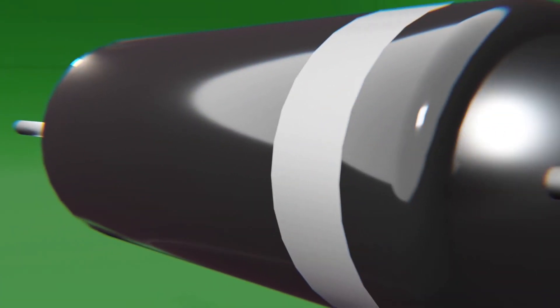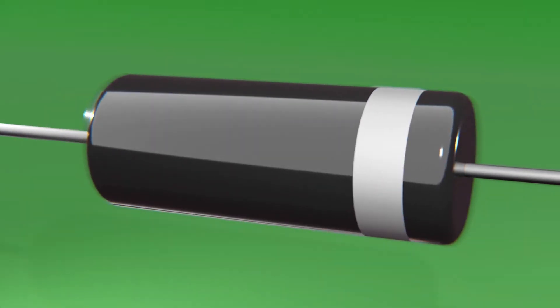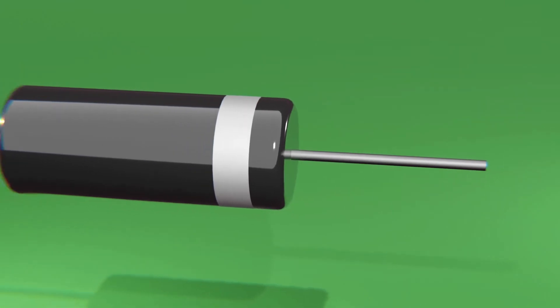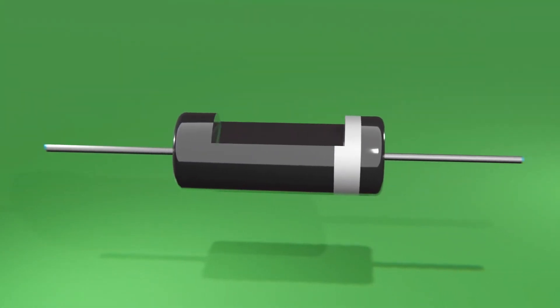The diode is an essential component of modern electronics and its main characteristic is that it only allows the passage of electricity in a single direction. And maybe you have already used it, but do you know how a diode works internally?